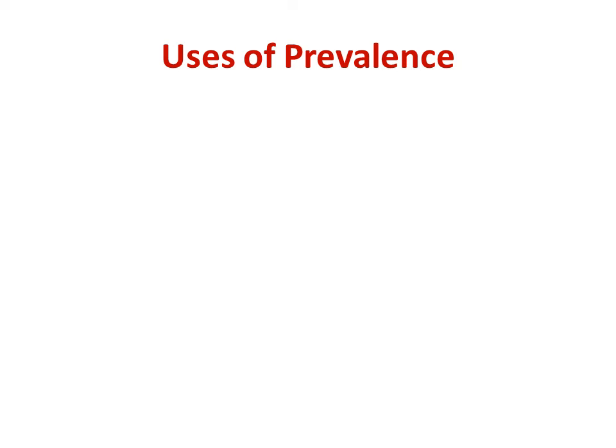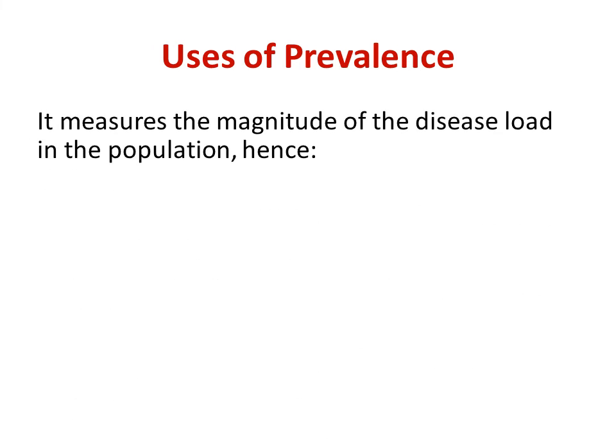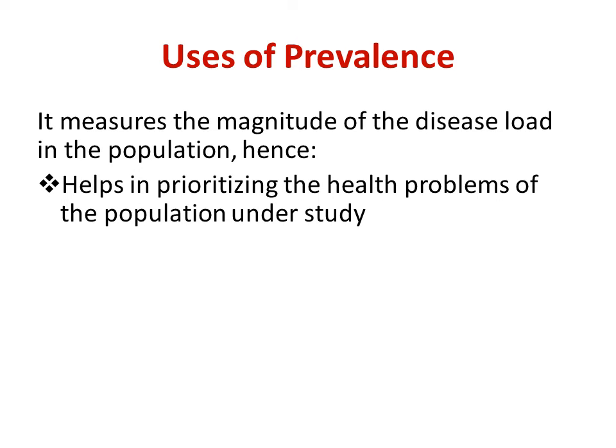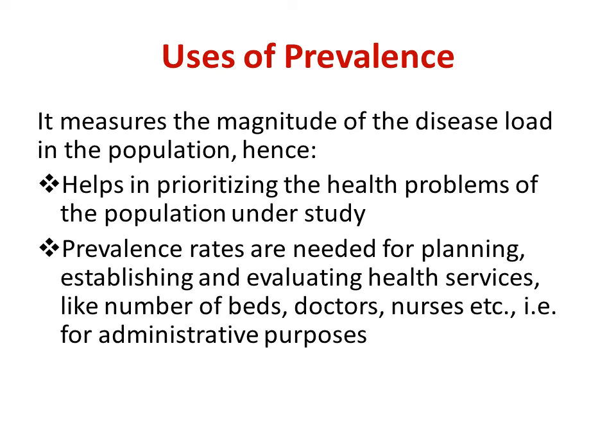Uses of prevalence: it measures the magnitude of disease load in a population and helps prioritize health problems. For example, the high prevalence of tuberculosis, leprosy, and malaria in our country has led the government to create national control programs for these diseases. No country can have control measures for all diseases affecting its population, so prioritization is necessary. Prevalence rates are also needed for planning, establishing, and evaluating health services — such as determining the number of beds, doctors, and nurses required for administrative purposes.